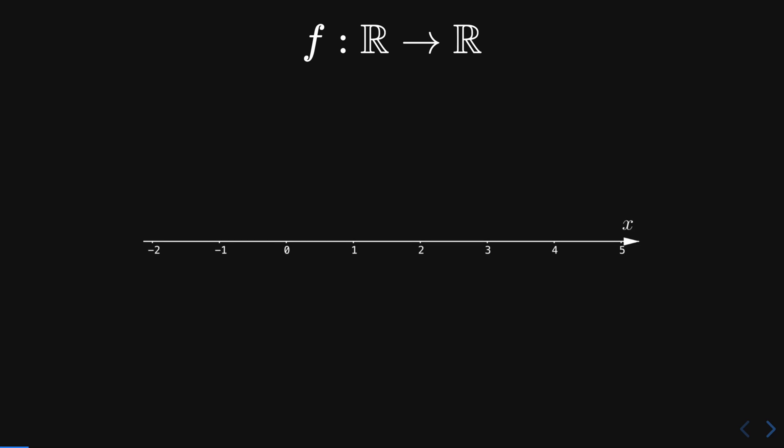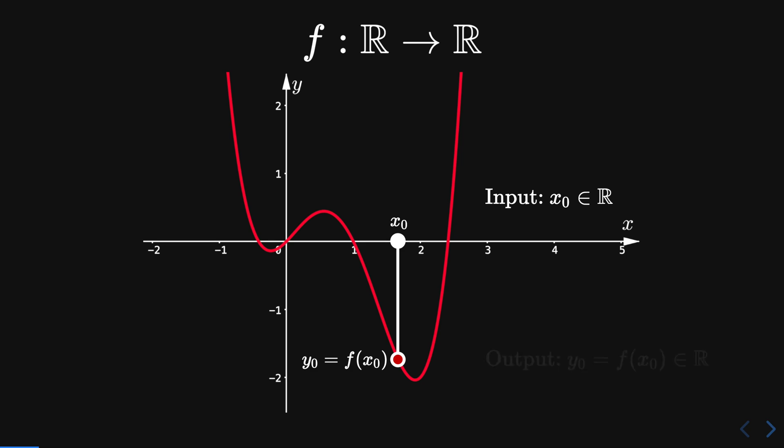We draw the x-axis and then the y-axis. We consider a value on the x-axis and apply the function to obtain f evaluated on that value. We do this for every value in the domain of the function to obtain a two-dimensional curve. The value x0 is known as the input and the value y0 is known as the output.